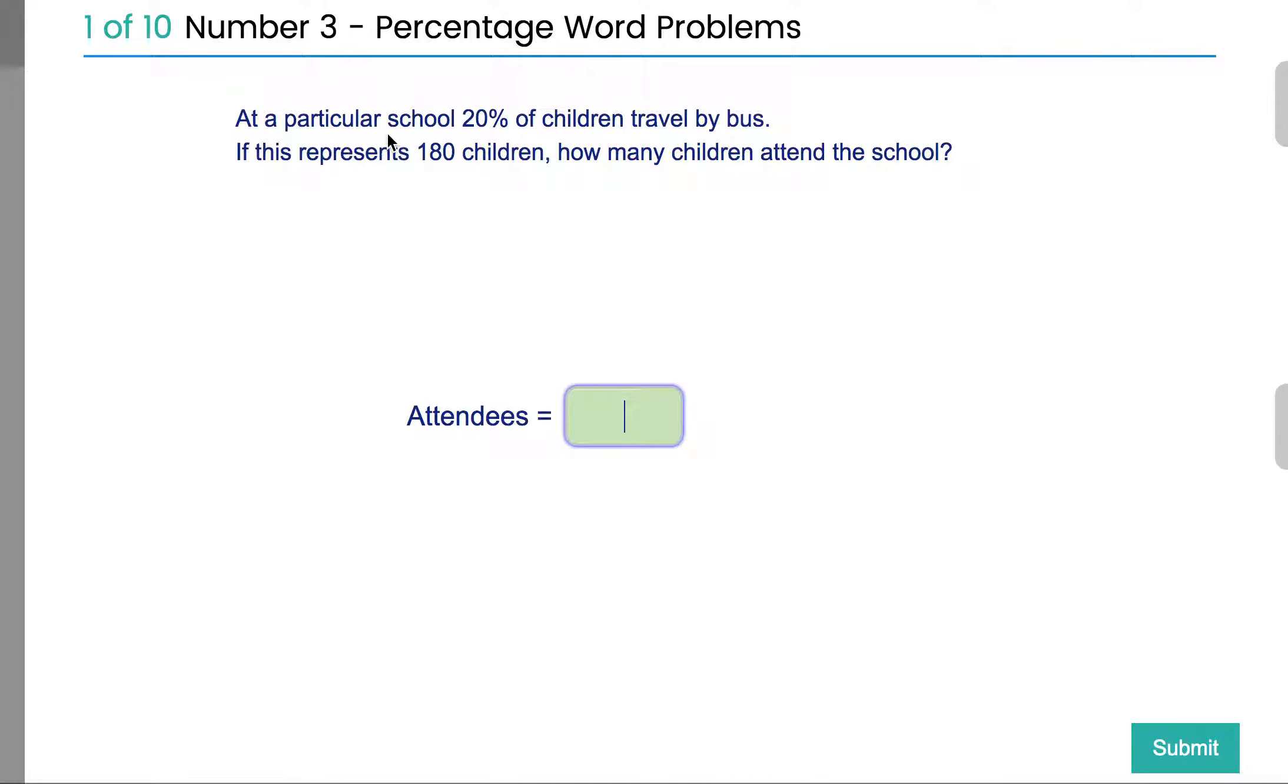Let's read the question here. At a particular school, 20% of the children travel by bus. If this is 180 children, how many attend the school? So we have to think, 180 children is 20%. It's told us that in the question. It says 20% is 180.